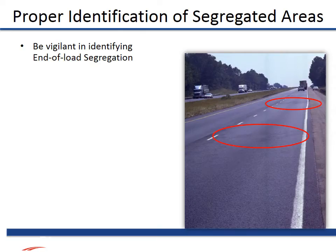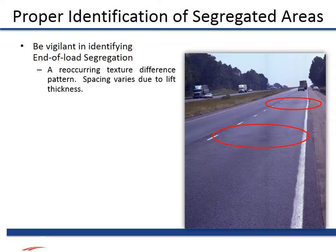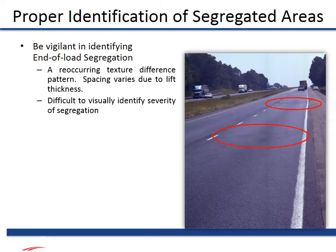Proper identification of segregated areas during asphalt pavement construction is very important. The department is vigilant about identifying asphalt segregation, especially the reoccurring type called end-of-load segregation. This type of segregation appears as a texture difference pattern, the spacing of which depends on the lift thickness. It typically occurs due to improper paving operations during the transition between truckloads. It can be very difficult to visually identify the severity of the segregation, so it is recommended to obtain and test cores to objectively determine its severity.